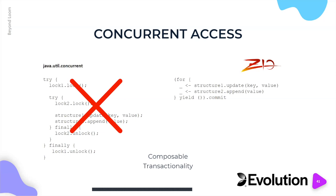In a library like ZIO, you get compositional transactionality. You can update as many structures as you want concurrently in the context of a transaction and then commit it. Where are the locks? They're an implementation detail — super low level. Why program at the level of locks when what a programmer wants is the level of a transaction? Just say: make this change, make this change, and make this change all in a transaction that either succeeds or fails. Commit it and you're done. That's how modern libraries like ZIO let you program.